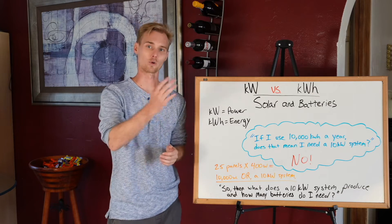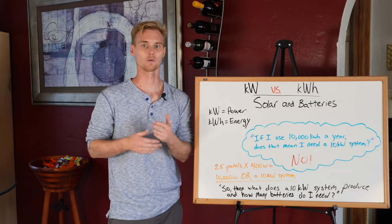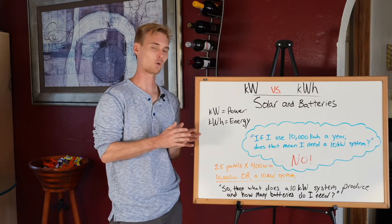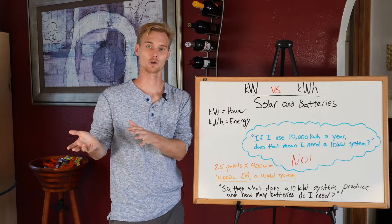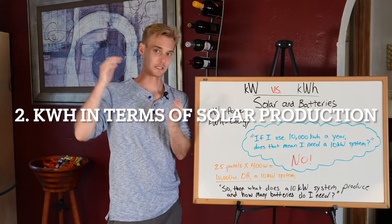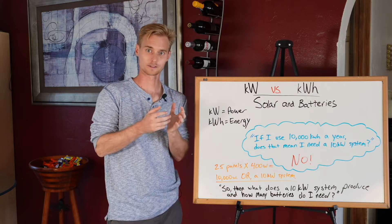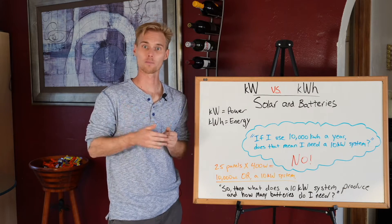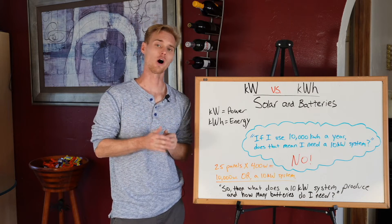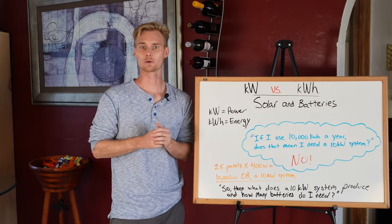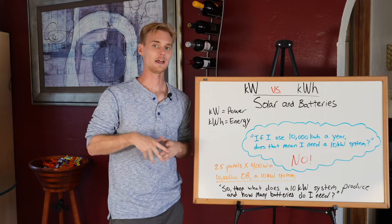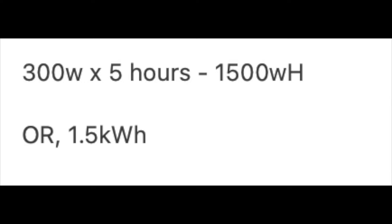It depends on where you are — the more north you are, the less you're going to produce. There are many factors, including the azimuth and the direction the panel is facing. Theoretically, let's say a 400 watt panel produces around 300 watts in the real world. If that panel is getting hit by the sun and producing 300 watts for one hour, at the end of that hour you'd have produced 300 watt hours, or 0.3 kilowatt hours. On a daily basis, one panel usually produces somewhere in the range of 1.5 to 2.5 kilowatt hours — if it produces 300 watts for five hours, that's 1,500 watts or 1.5 kilowatt hours.